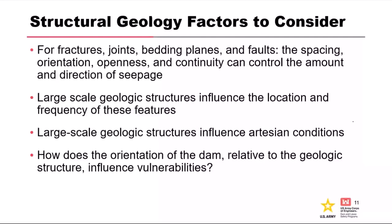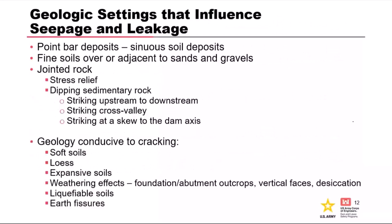These are the things we're looking for when characterizing a site: what was the geomorphology, was the material deposited as part of a riverine system, are there fine soils over adjacent sands or gravels, is there jointed rock, what does that rock look like, are there stress relief fractures, is it sedimentary? We think about whether the geology makes the material conducive to cracking. Cracking provides susceptibility to some of the internal erosion processes.